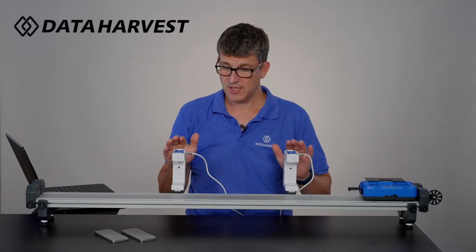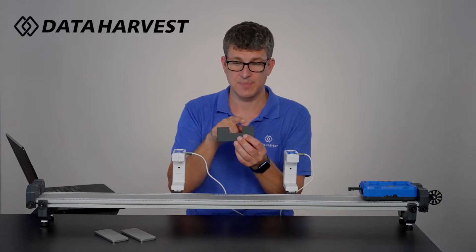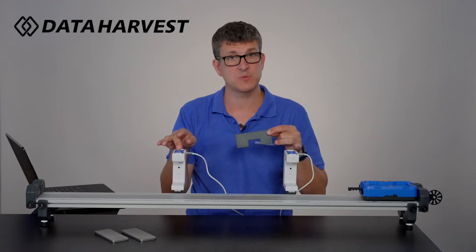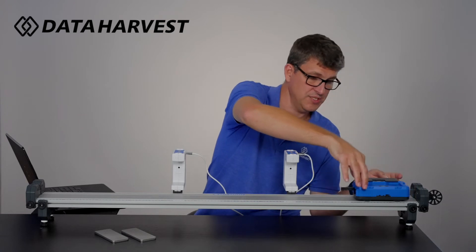We've got two light gates here with our dynamic system. We've got a cart with an interrupt card so you can have a double interrupt or a single interrupt. We're going to use the single interrupt because we're using two light gates so these fit really easily straight onto the cart. We can pop that onto there.